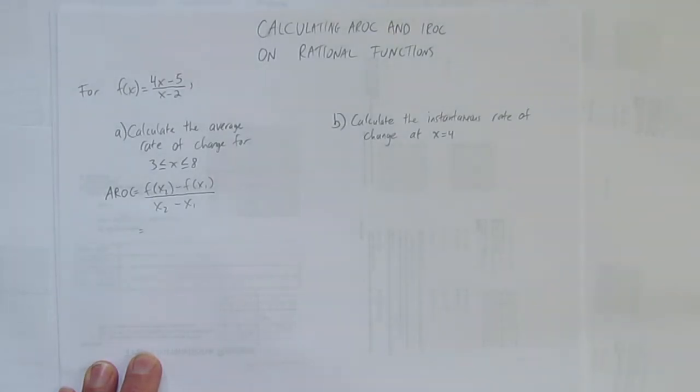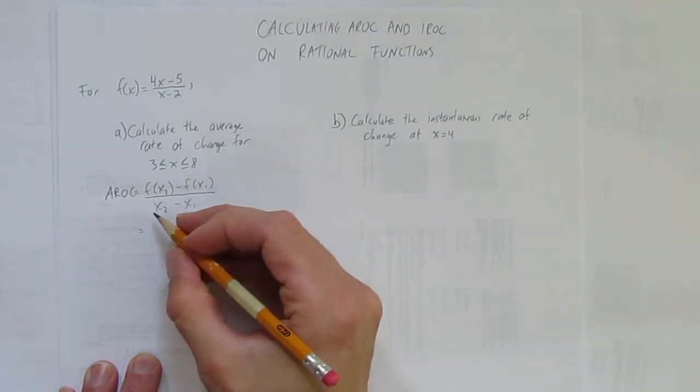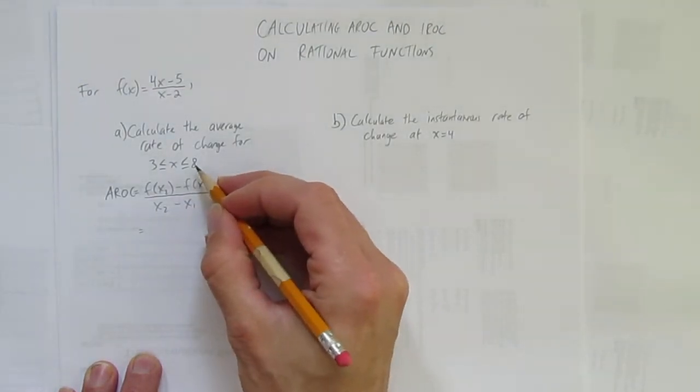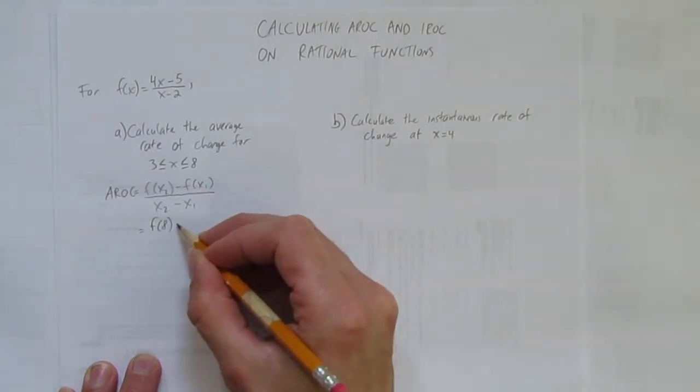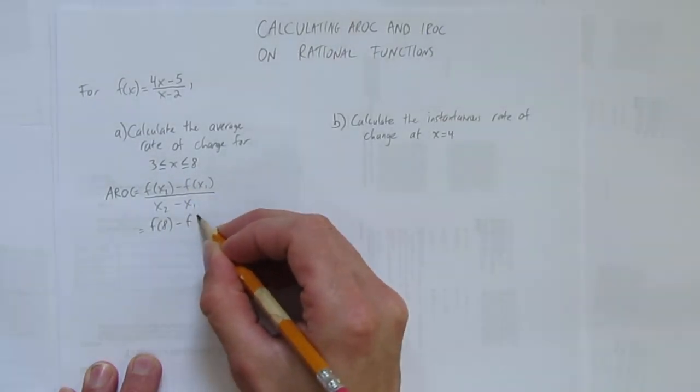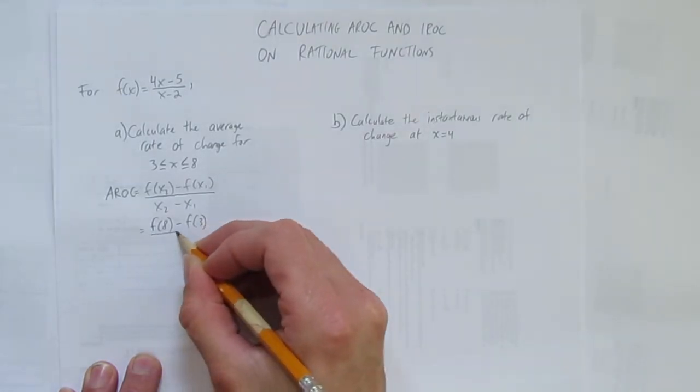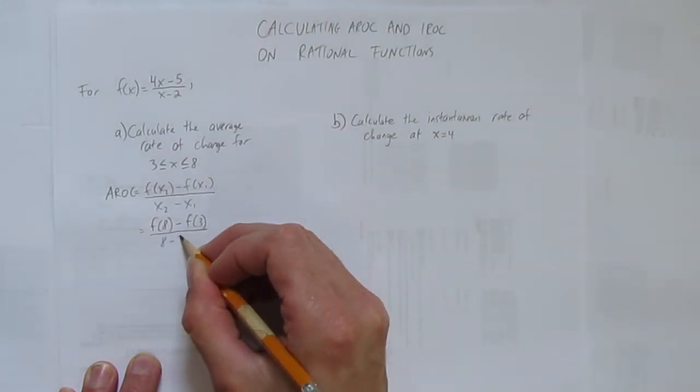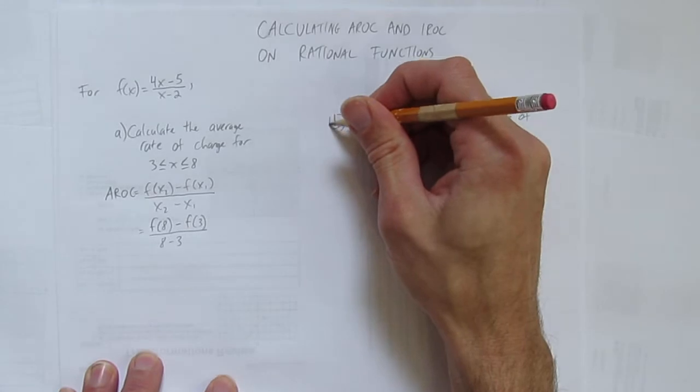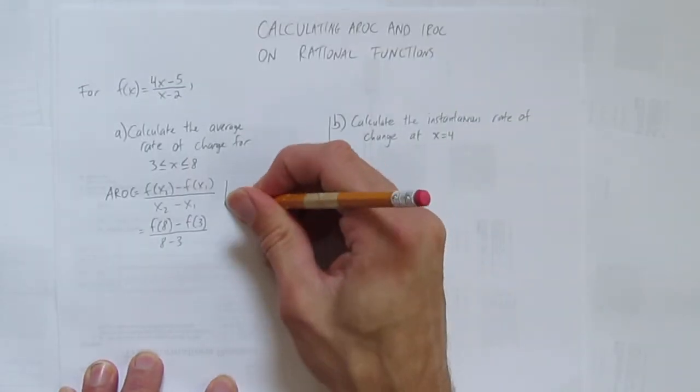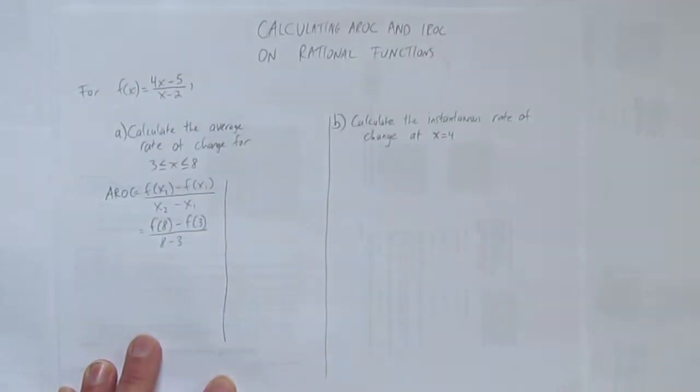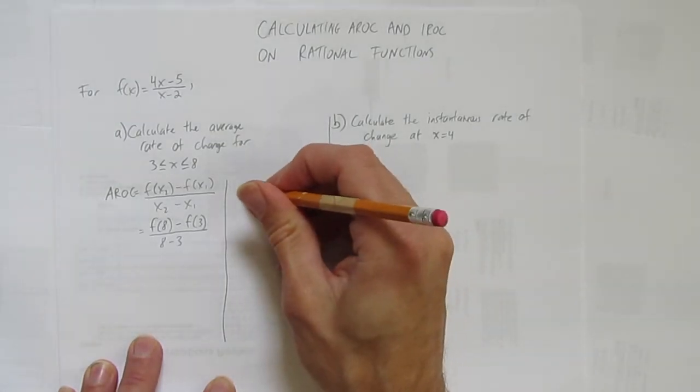And now I've got to sub in. I want to know, use this second number, that's your second x, f(8) - f(3) all over 8 - 3. Now it's usually where I go on the side and do some work. You could do it in here, but then you have a lot of extra writing to do.